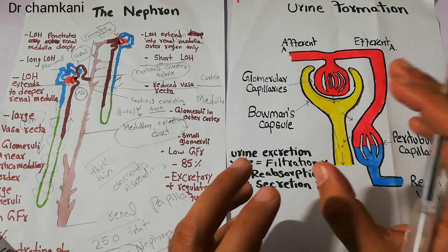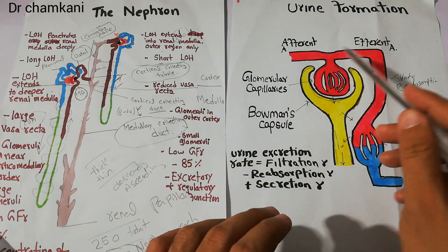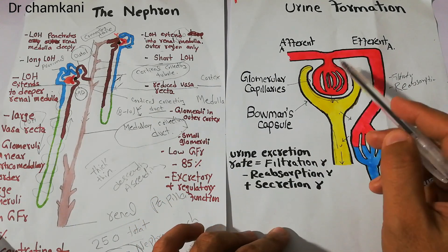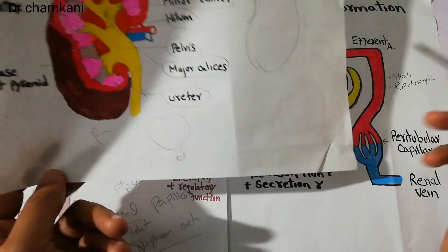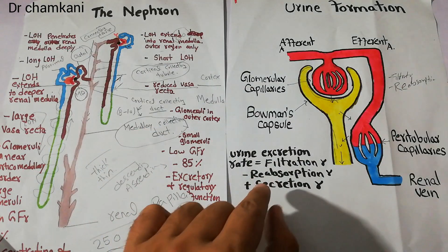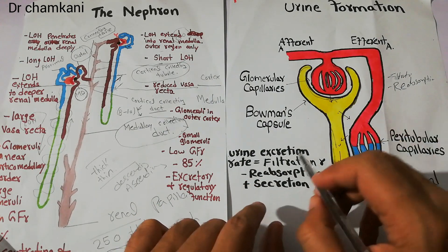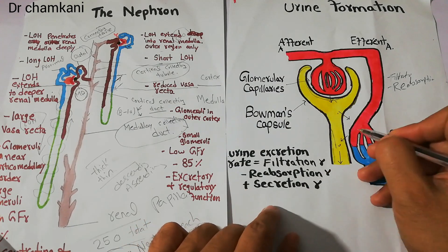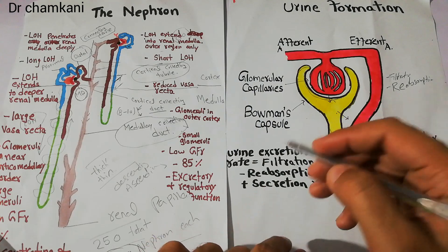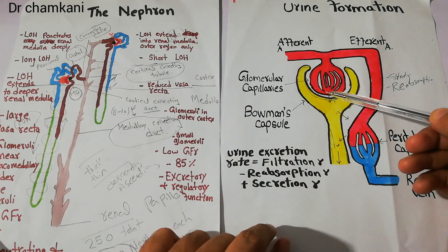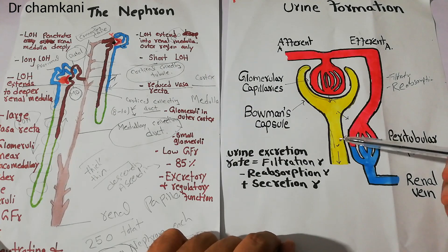The rate of urine excretion is determined by combining the filtration process of all the thousands of nephrons present in the whole kidney. Then we subtract reabsorption because some substances are reabsorbed into the peritubular capillaries. Finally we add the secreted substances because some substances are added back into the filtrate. So: urine excretion rate = filtration rate − reabsorption rate + secretion rate.